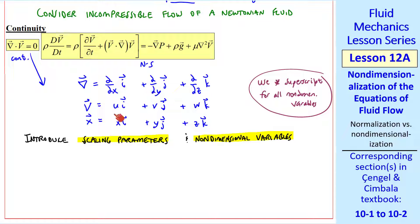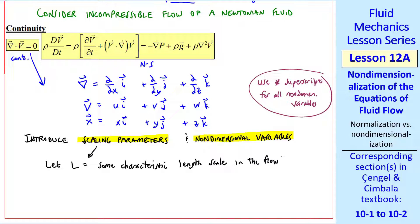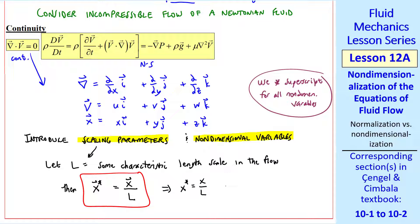All these variables are dimensional without any superscript. As scaling parameters, we let l equal some characteristic length scale in the flow. For example, if you're looking at flow over a circular cylinder, you would set l equal to the diameter. Then our non-dimensional x-coordinate x* will be x over l. Since x has a dimension of length and so does l, this is non-dimensional. In Cartesian coordinates: x* = x/l, and similarly for y* and z*.